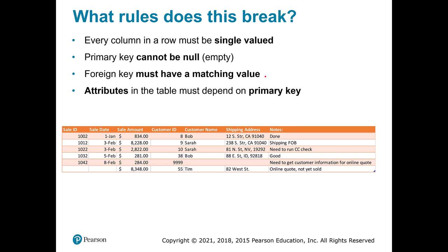Let's look at some violations. Columns in a row that are not single-valued: looking at the example, a shipping address has the street, the city, and the name — that's not one single value, it needs to be broken into separate items. We can't have a null sales ID. If there's a foreign key, it must match something: customer ID 9999 can't be valid because it doesn't match an actual customer. And everything should depend on the primary key. If the primary key is sales ID, then customer name really depends on customer ID — if you change the ID the name changes — so it should be in its own table.